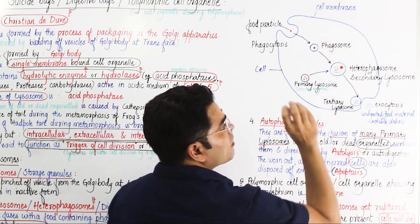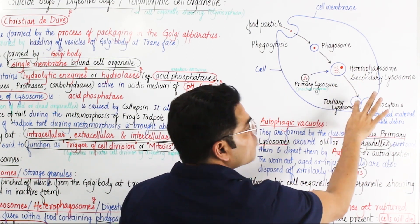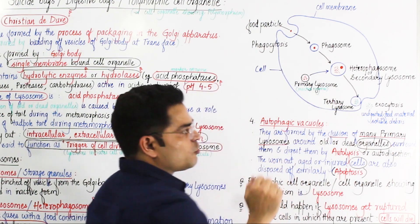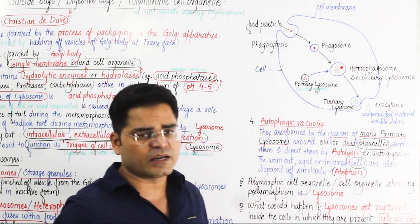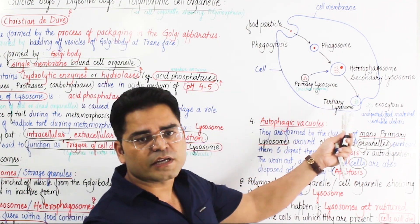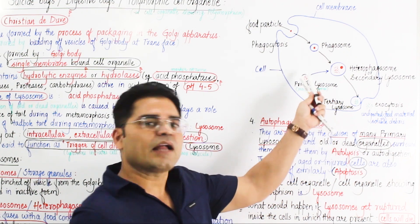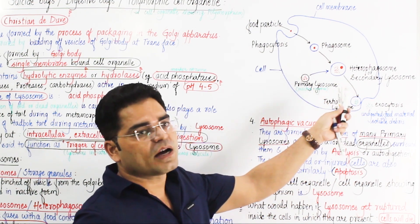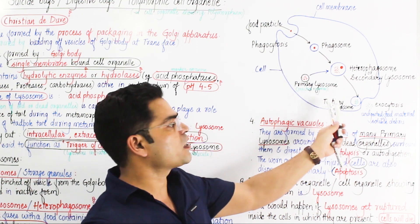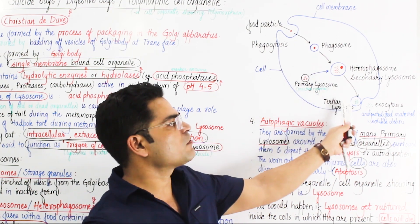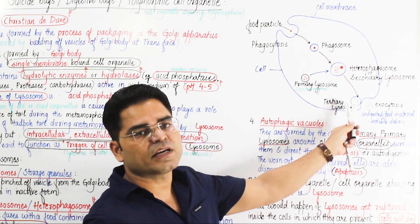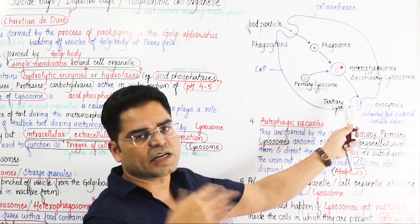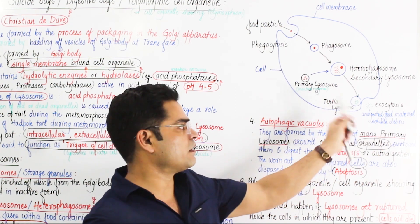After digestion in the secondary lysosome, undigested food remains. This residual structure containing undigested material is called the tertiary lysosome, also known as the residual body. The undigested waste is stored in this tertiary lysosome until it is expelled from the cell.